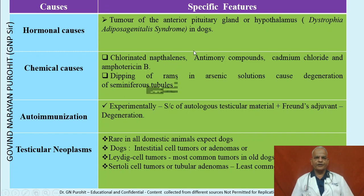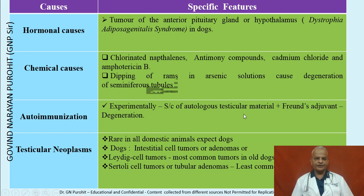Tumors of the anterior pituitary gland, or conditions such as dystrophia adipogenitalis in dogs, can also cause degeneration. Chemical causes like chlorinated naphthalene, naphthalene, and antimony compounds — including dipping of rams in arsenic solution — can cause degeneration of seminiferous tubules. Subcutaneous injections of autologous testicular material plus Freund's adjuvant (autoimmunization) can also result in testicular degeneration.